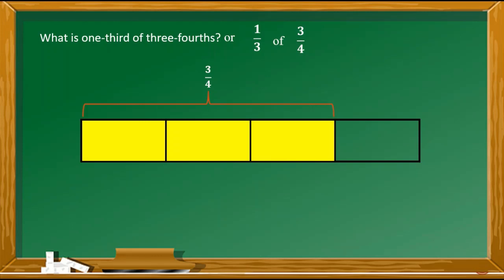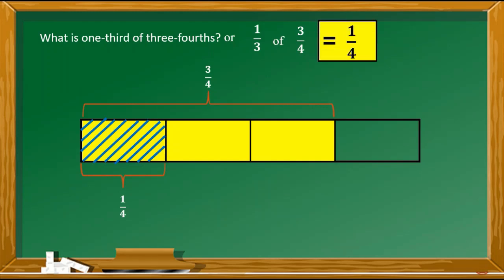Hahatiin natin ang three-fourths into three equal parts. Kukunin natin ang one-third nito — isishade natin ang isang bahagi. So that represents one-third of three-fourths. Pero sa kabuan ang parting ito ay nagre-represent ng one-fourth of a whole, so ibig sabihin ang one-third of three-fourths ay equal to one-fourth.